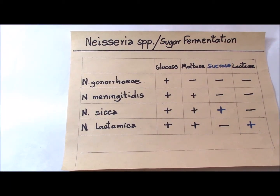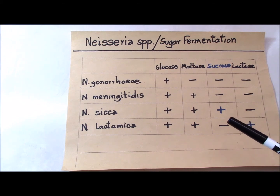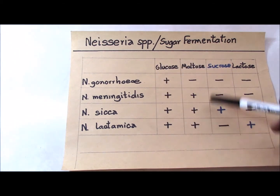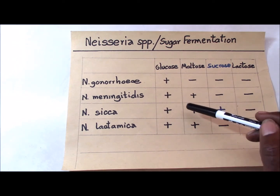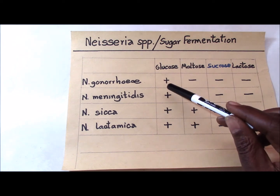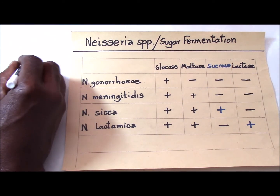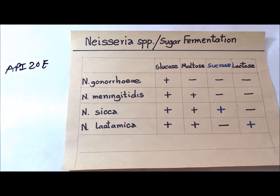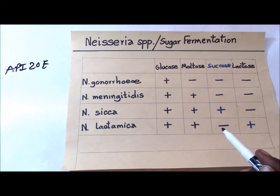Welcome to this video and thank you for tuning in. The focus of this presentation is on the Neisseria species and some of their important sugar fermentation reactions. The carbohydrate utilization pattern is what you are looking at here — a table that can be used to presumptively differentiate the species. In most clinical laboratories we generally rely on the API 20E system for the identification of most isolates of clinical importance. However, for the AACP exam review, it is important to commit this table to memory.